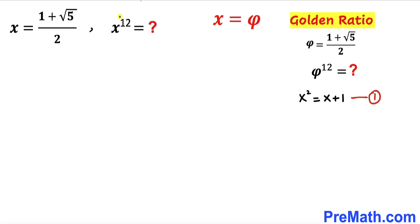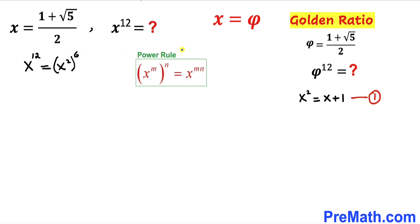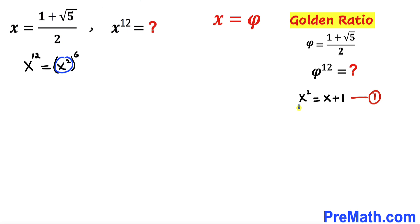Since we want the value of x power 12, we can rewrite x^12 as (x²)^6 using the power rule, where nested exponents can be multiplied out. Focusing on x², we know from Equation 1 that x² equals x plus 1, so we replace x² with x plus 1, giving us (x plus 1)^6.